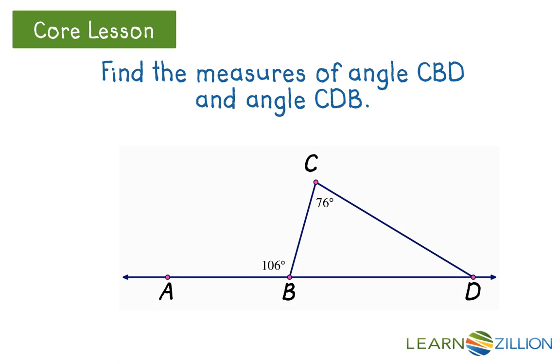To solve this problem, we need to use the information given to us. We know that the exterior angle from point B is 106 degrees. Angle CBD must be equal to 180 minus 106, or 74 degrees.